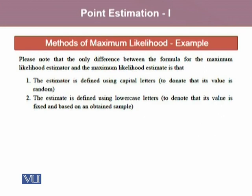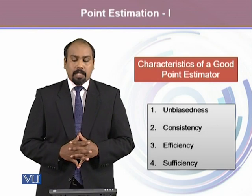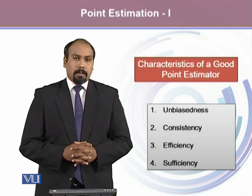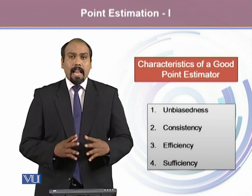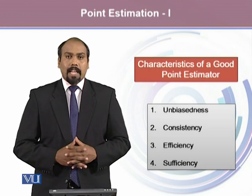One should note that the only difference between the formula for the maximum likelihood estimator and the maximum likelihood estimate is that the estimator is defined using capital letters to denote that its value is random, whereas the estimate is defined using lowercase letters to denote that its value is fixed and based on an obtained sample. There are a few characteristics of a good point estimator: it should be unbiased, consistent, efficient, and sufficient.